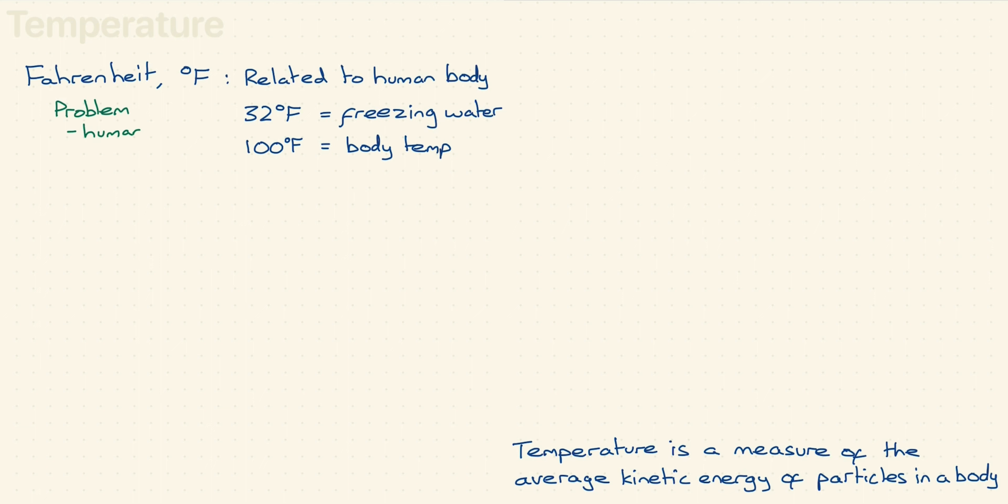The Celsius scale improved on this by setting 0 degrees C as the freezing point of water and 100 degrees C as the boiling point of water. Nice easy numbers, and water can easily be frozen or boiled. There's a couple of problems though. One is that it depends on water, and scientists don't like depending on a material because that material could change.